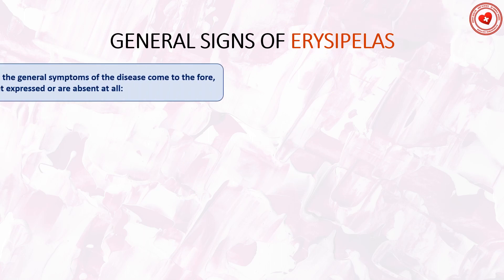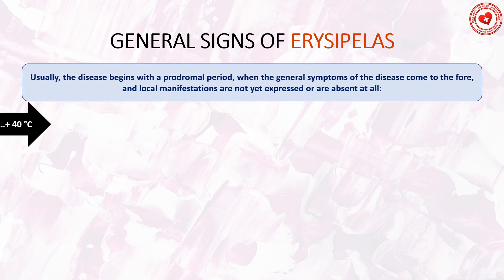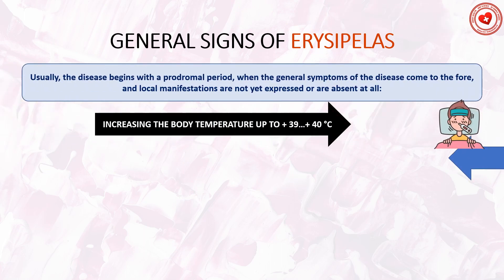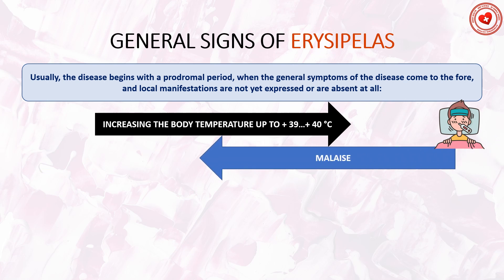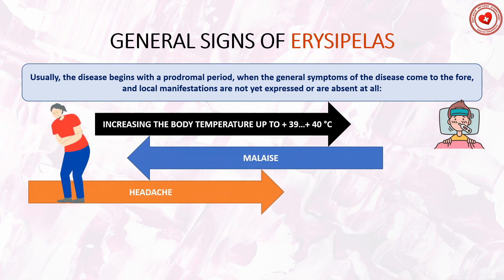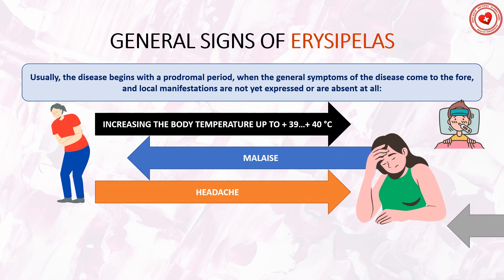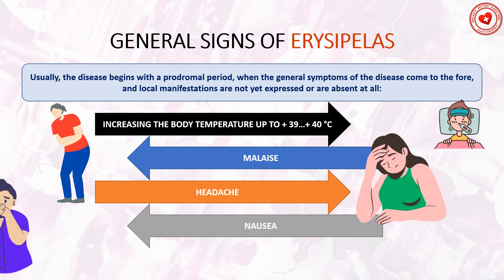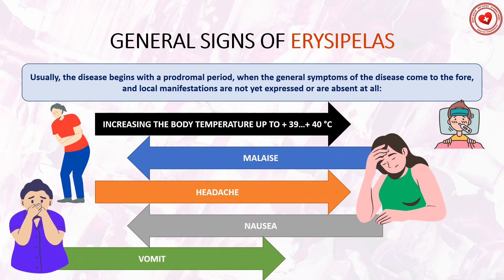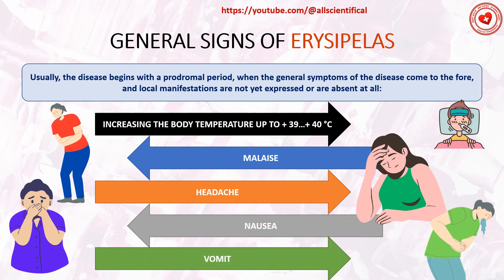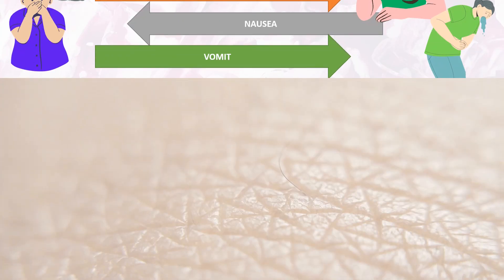General signs of erysipelas. Usually the disease begins with a prodromal period when the general symptoms come to the fore and local manifestations are not expressed or are absent at all. These include: rise in temperature to 39–40°C, malaise, headache, nausea, and vomiting.